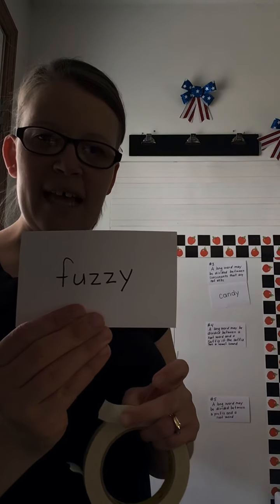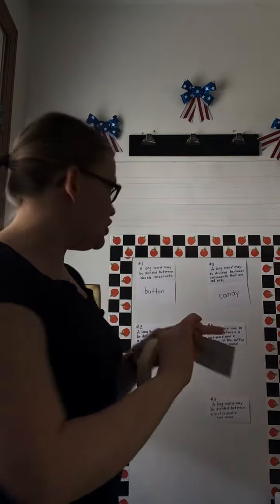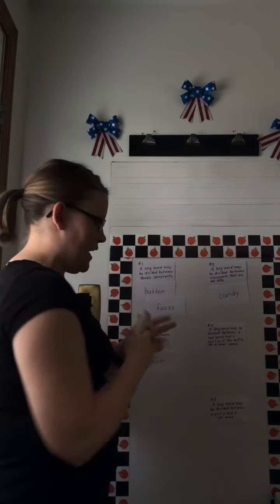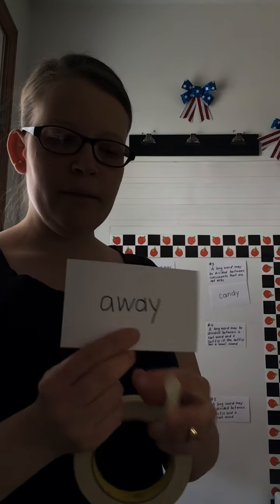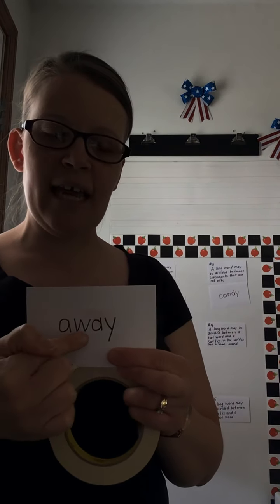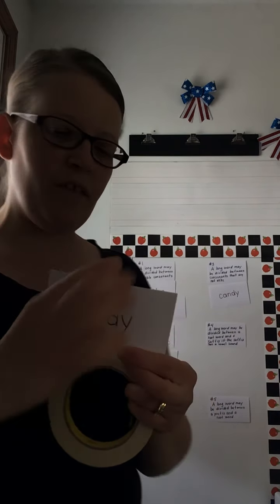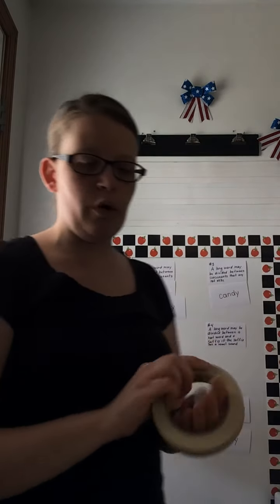'Fuzzy' — that was rule number one, divide between two consonants that are the same. Next word: 'away.' That's rule number five — divide between a prefix and a root word. A prefix comes before the root word.